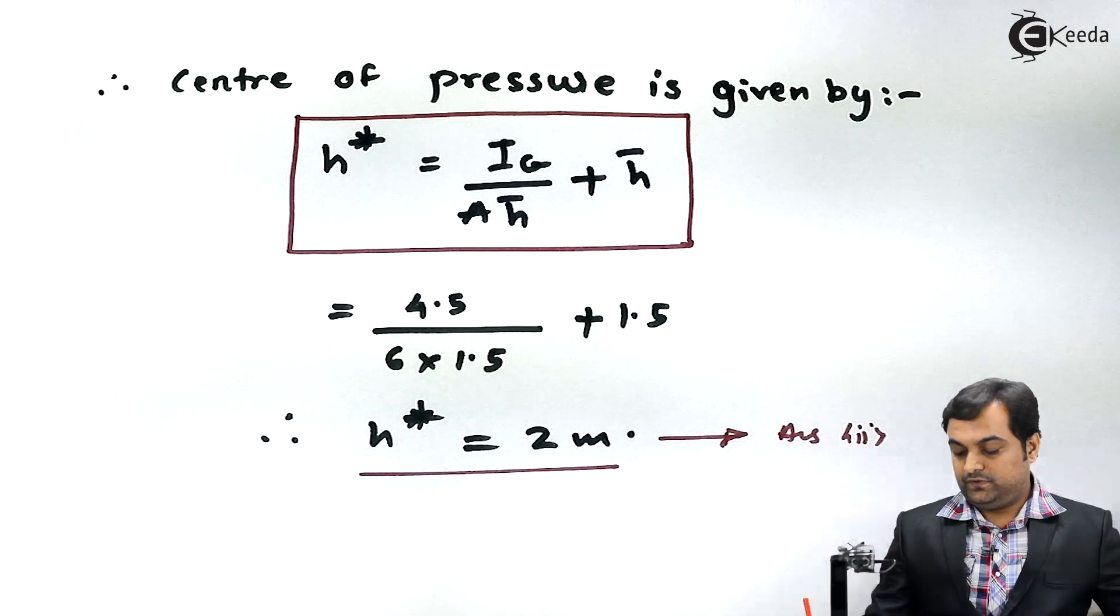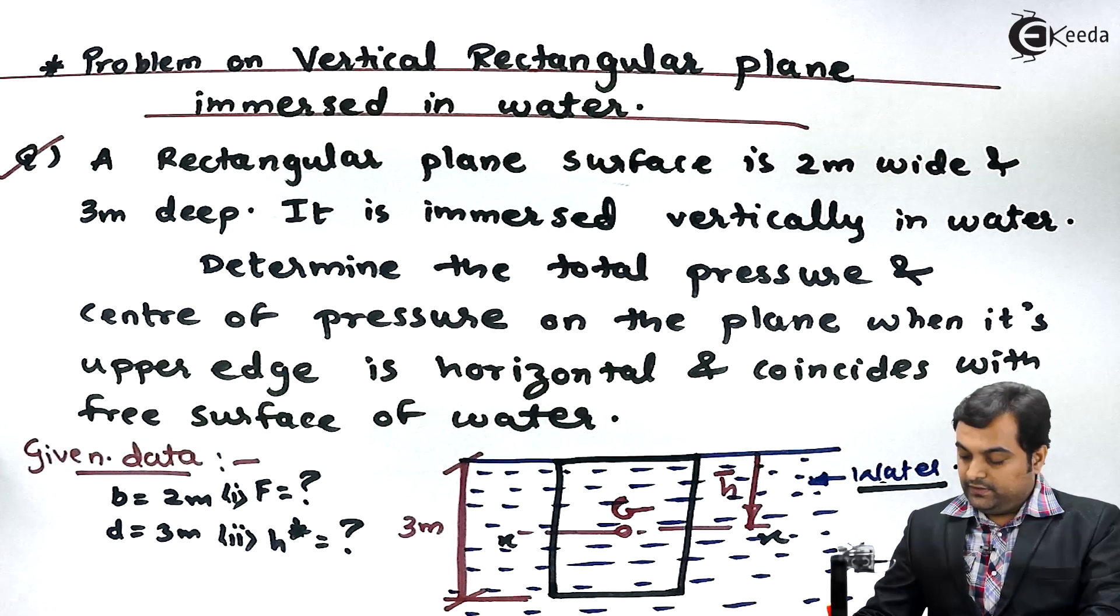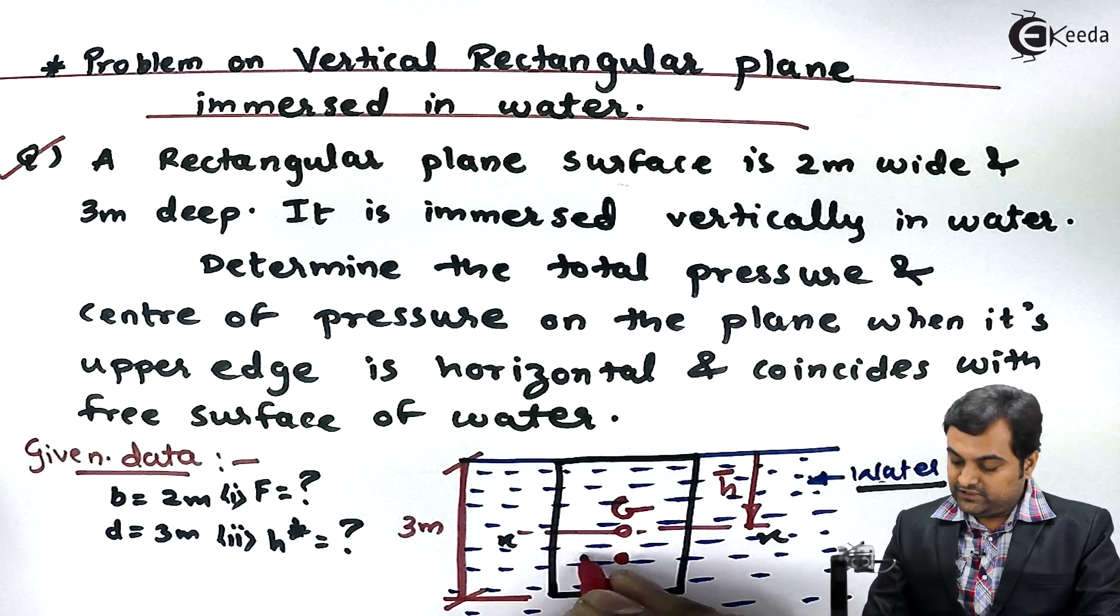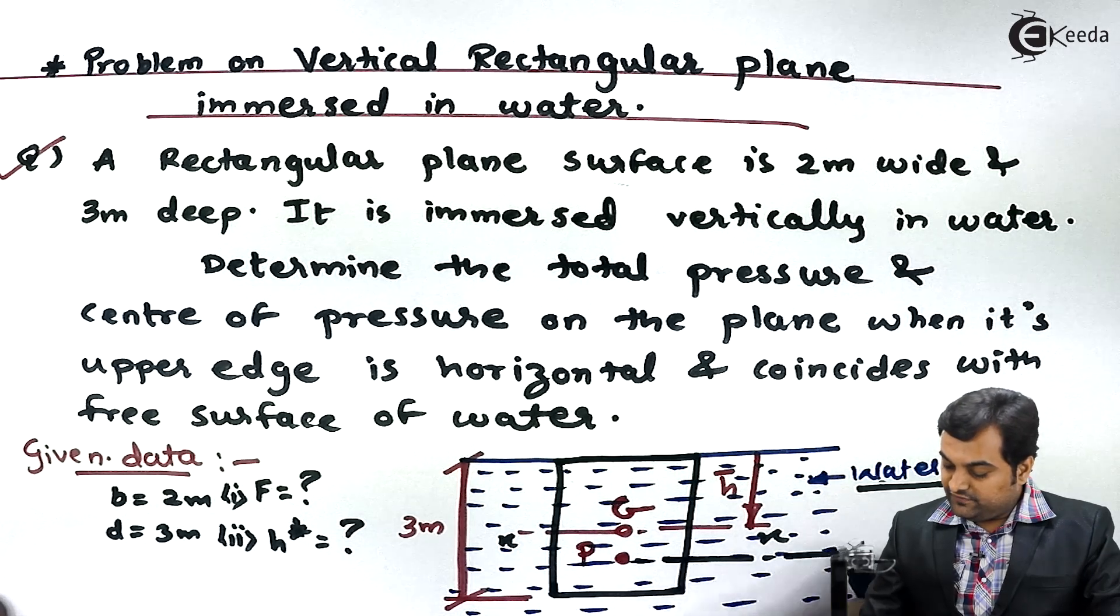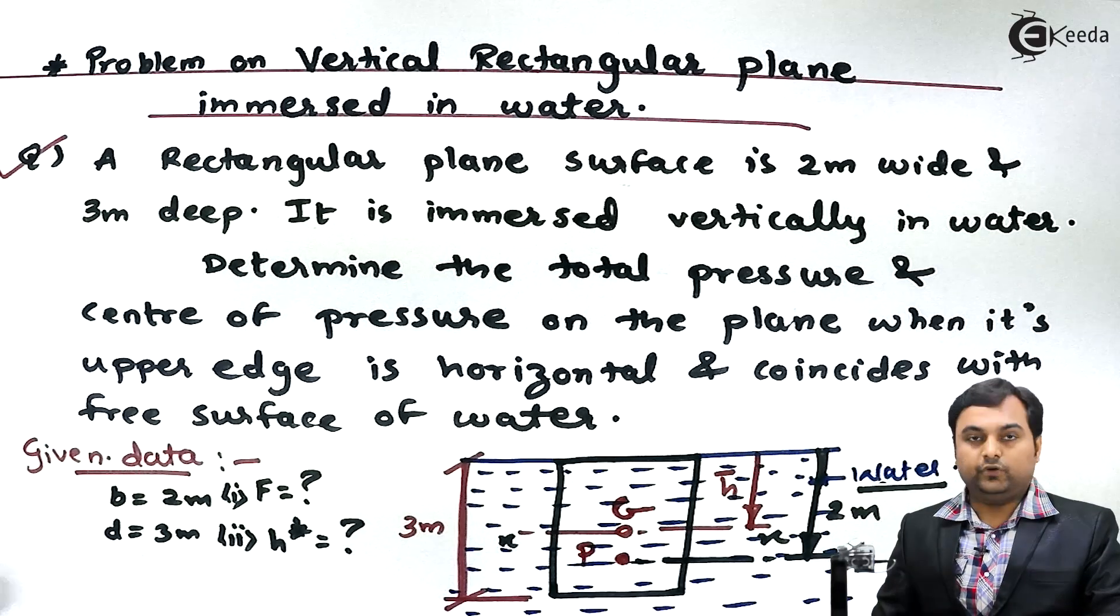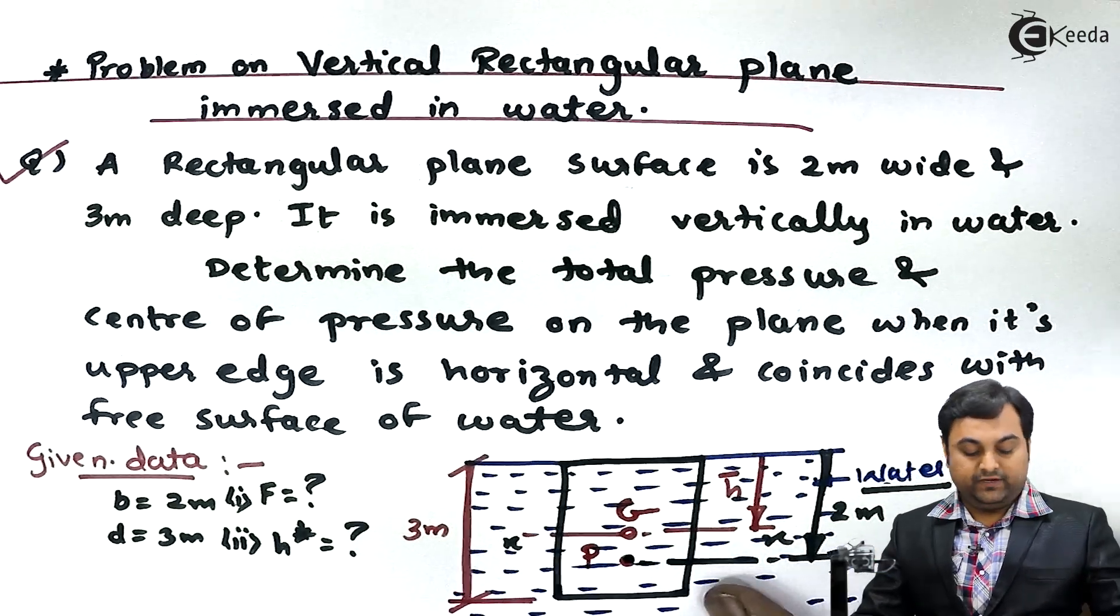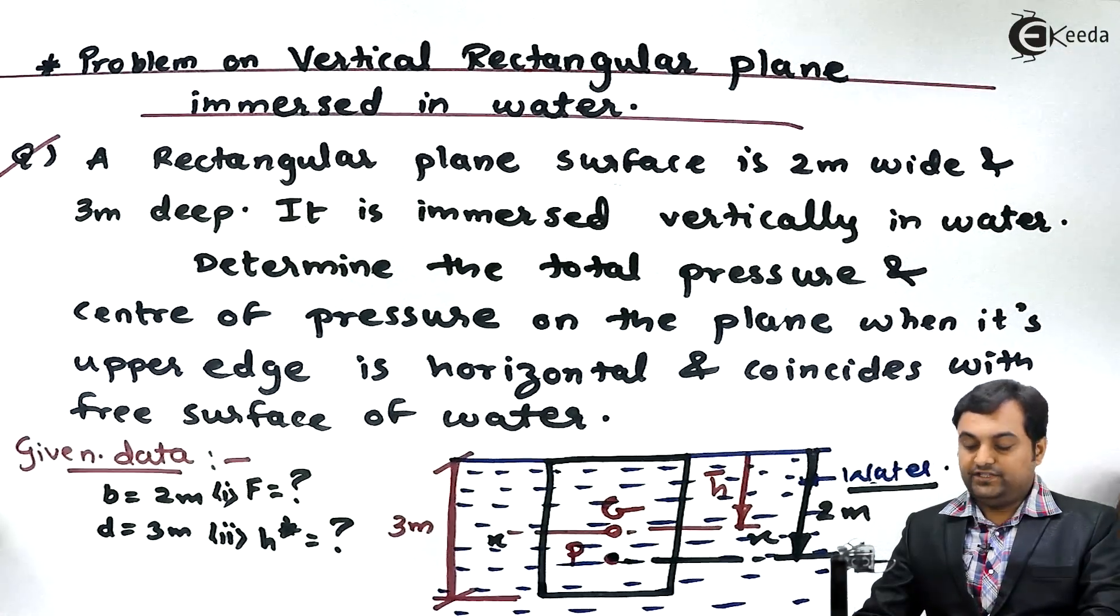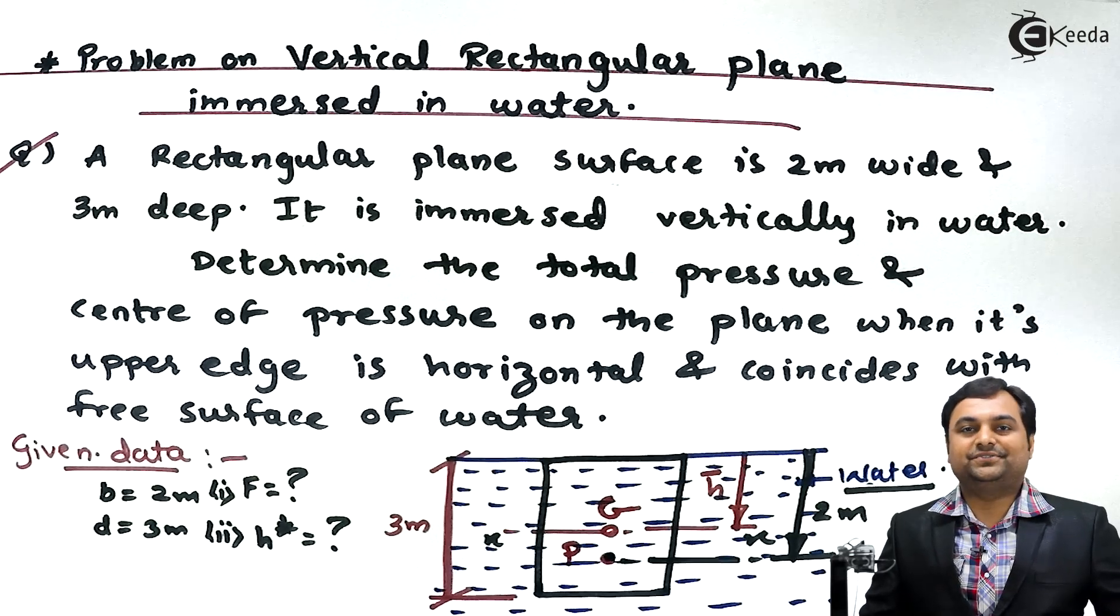This is my second answer. So now if I can show it on the diagram, h bar was 1.5, so below this centroid we have another point called as point P - that is the center of pressure - and its distance from the free surface is 2 meter. So at 2 meter distance from the free surface, at this location the total force or hydrostatic force is acting whose value we have calculated. So in this video we have seen how to calculate total pressure and center of pressure.